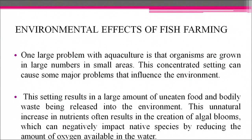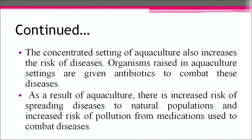Environmental effects of fish farming: one large problem with aquaculture is that organisms are grown in large numbers in small areas. This concentrated setting can cause major problems that influence the environment, including a large amount of uneaten food and bodily waste being released into the environment. This unnatural increase in nutrients often results in the creation of algal blooms, which can negatively impact native species by reducing the amount of oxygen available in the water. The concentrated setting also increases the risk of diseases. Organisms raised in aquaculture settings are given antibiotics to combat diseases, resulting in increased risk of spreading diseases to natural populations and increased pollution from medication.